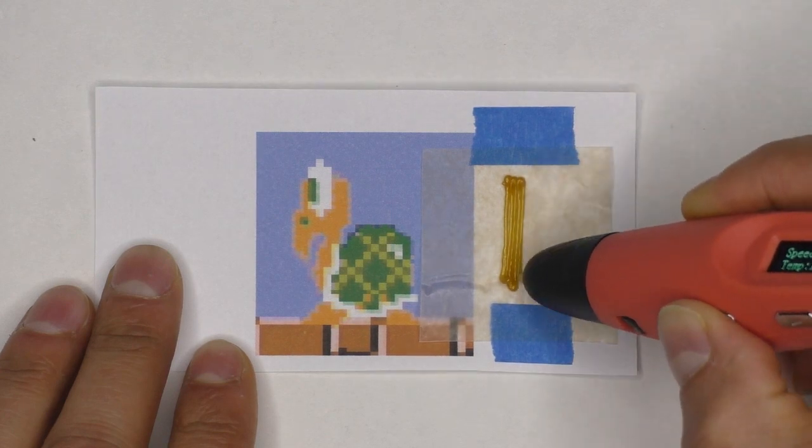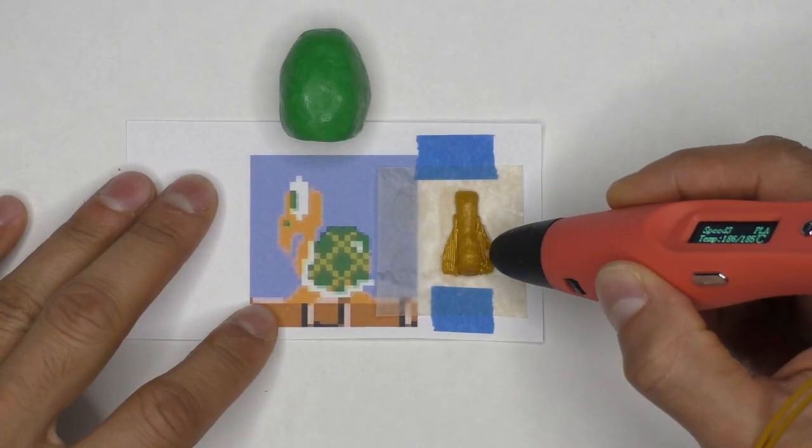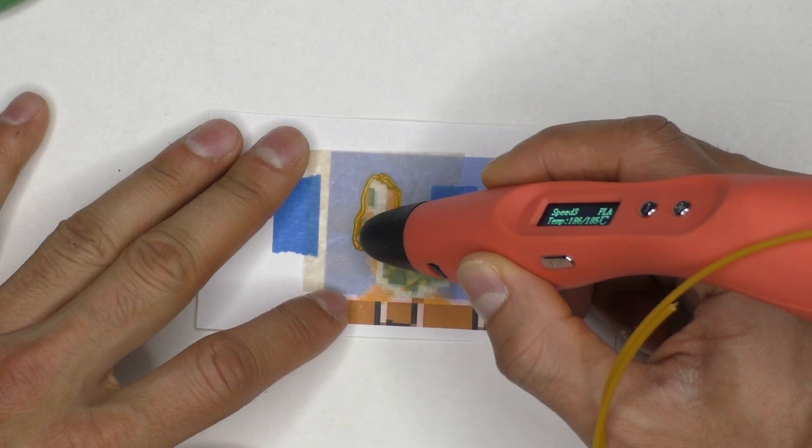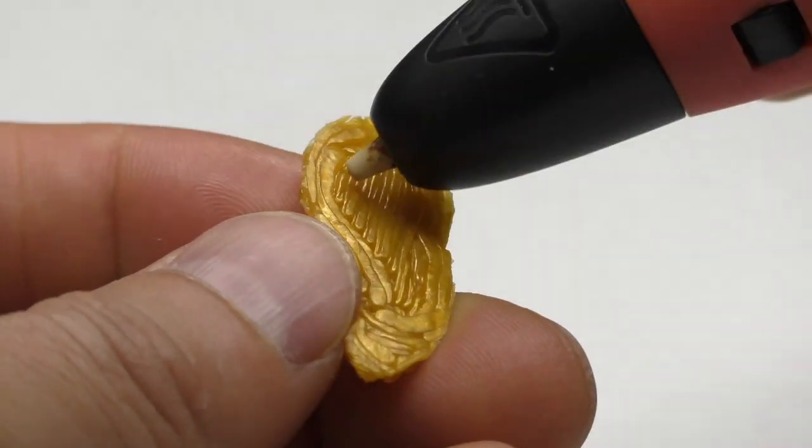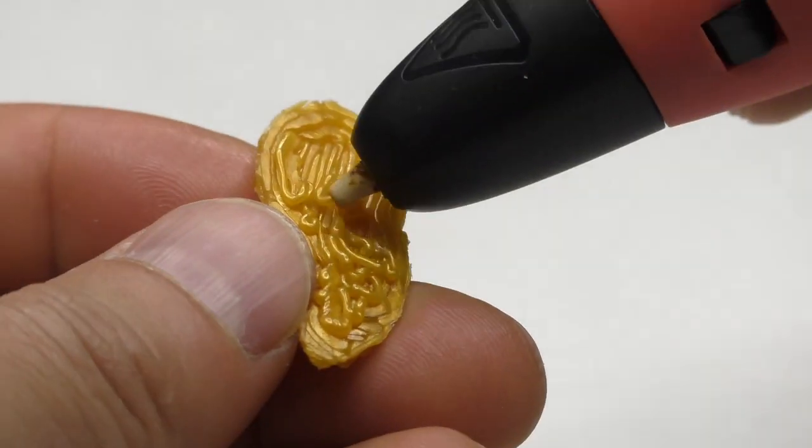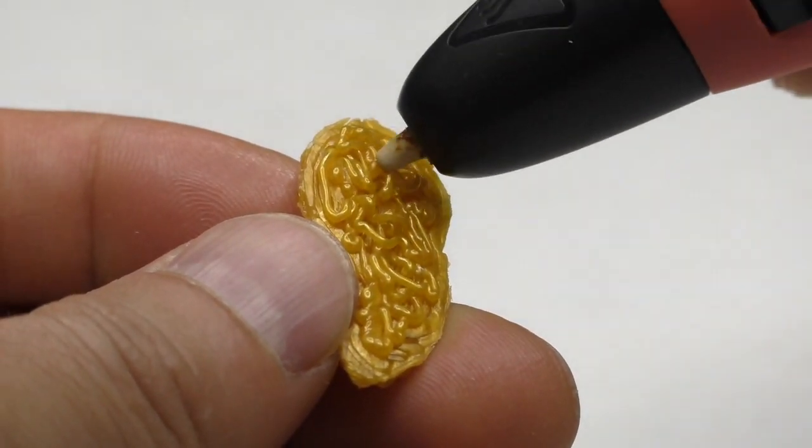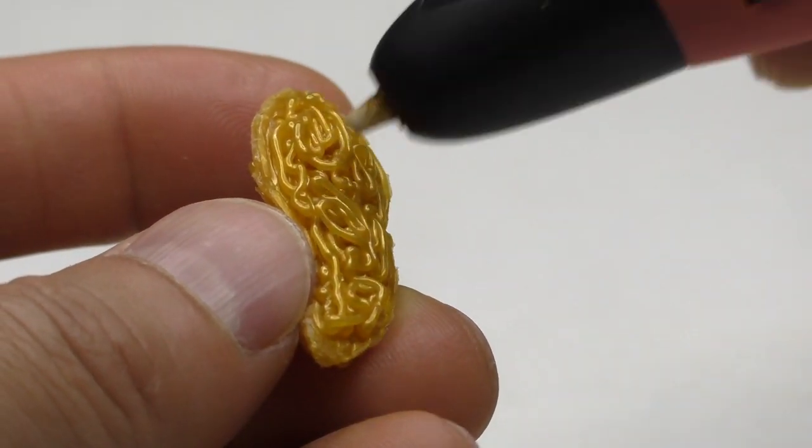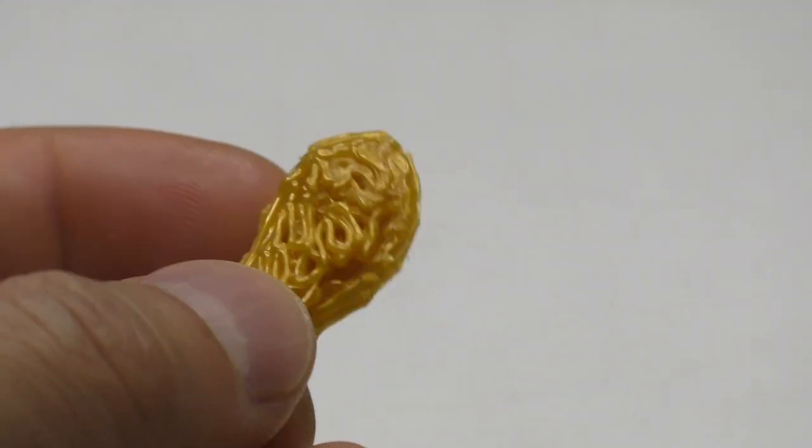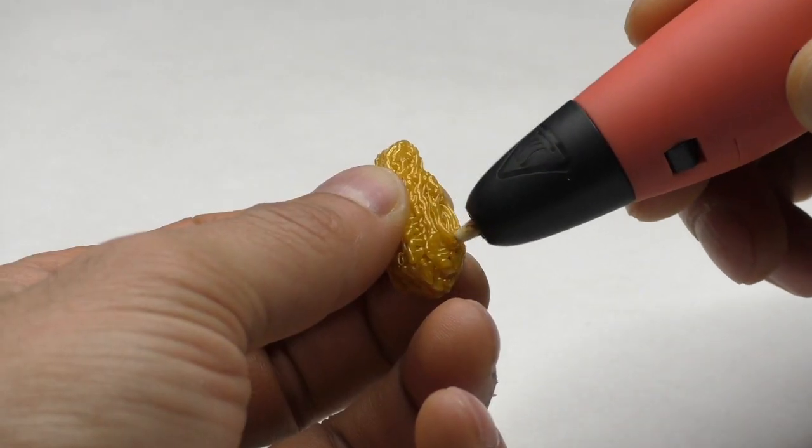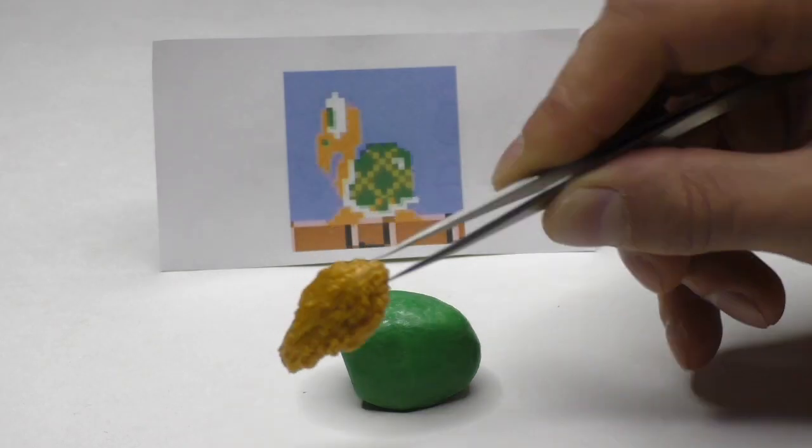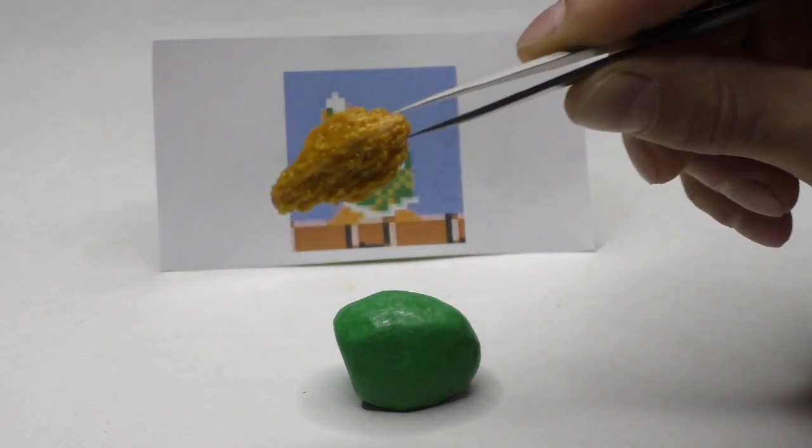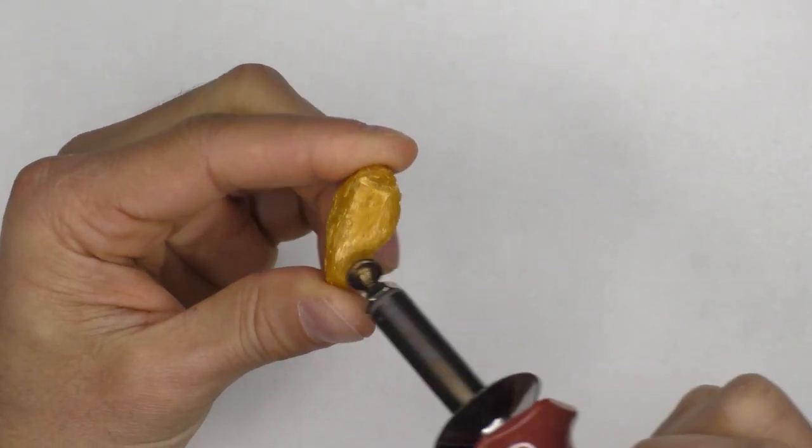And now we're going to move on to the neck and head. Building up the neck is pretty easy, but the head ends up taking longer. Since it's pretty small, I ended up not using foil as the infill and just use filament to build up the whole head. So that's what you can see I'm doing here. I'm just drizzling filament out of the pen to build up the shape of the head. Once I have the shape the way I want it, I then move on to our old friend, smoothing and sanding.